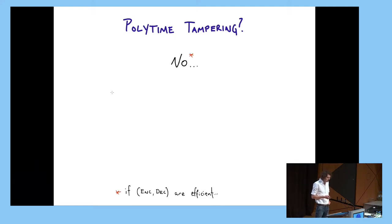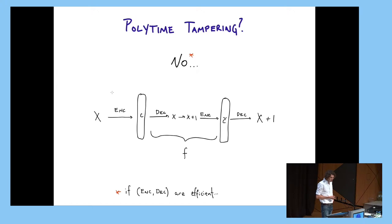So is this possible? Unfortunately, no, if we require, additionally, that our encoding and decoding are efficient. This is a simple attack. If I can always decode the message, say add one to it or whatever you want, and then re-encode it, if the encoding and decoding are efficient, then this tampering function is also efficient. So we can't handle arbitrary polynomial time tampering with some fixed polynomial time code. It's very different from the normal case in cryptography.